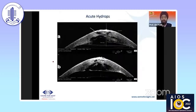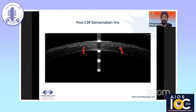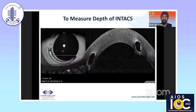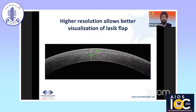Let us look at a case of keratoconus with acute hydrops. You can also look at the post-demarcation line of C3R — you can see whether there is a demarcation. This shows intracorneal ring segments as well.